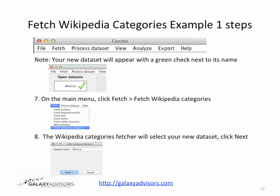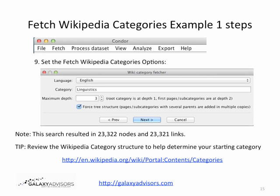Your dataset will appear with a green checkmark next to it in the upper left corner, indicating this is the active dataset. In Step 7, on the main menu click Fetch, Fetch Wikipedia Categories. The Wikipedia Categories Fetcher will select your new dataset — simply click Next. In Step 9, fill in the Fetch Wikipedia Category options: Language is English, Category is Linguistics, and I select a maximum depth of 3. The root Linguistics is depth one, then it goes two depths below that for the individual category trees. Click Next.